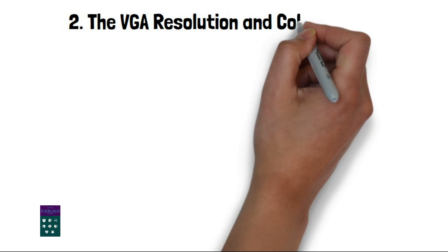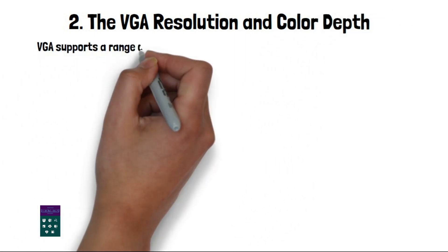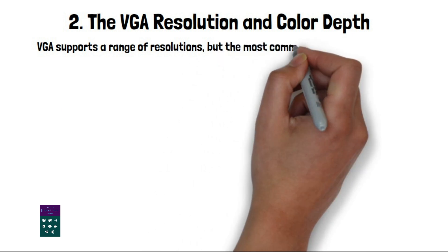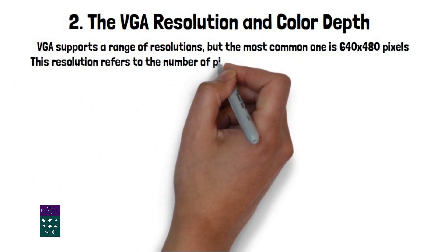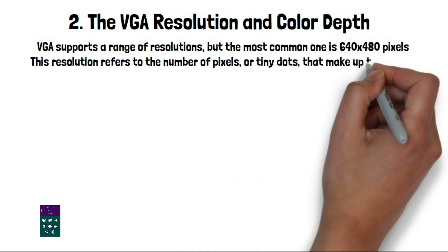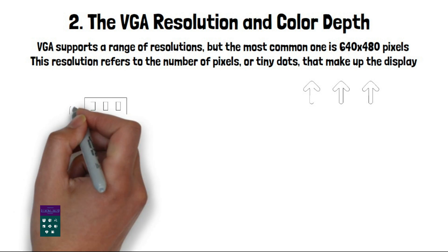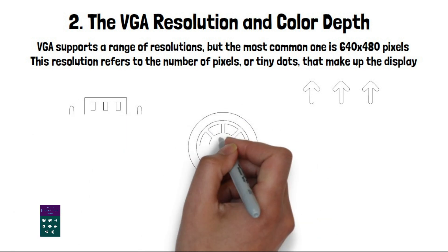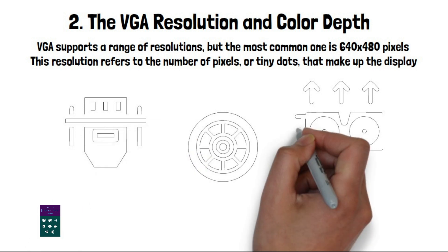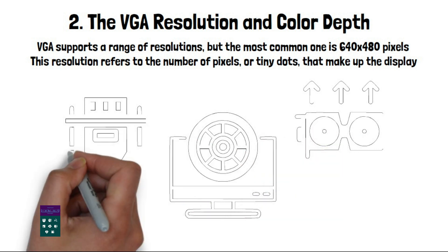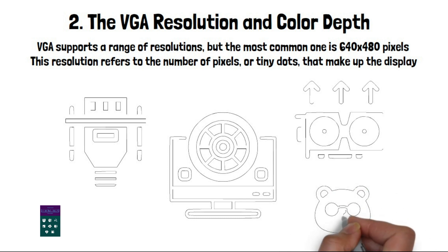VGA resolution and color depth. VGA supports a range of resolutions, but the most common one is 640x480 pixels. This resolution refers to the number of pixels, or tiny dots, that make up the display. The more pixels, the sharper and more detailed the image. Higher resolutions, such as 800x600 or 1024x768, became possible with advancements in VGA technology and are commonly used today.